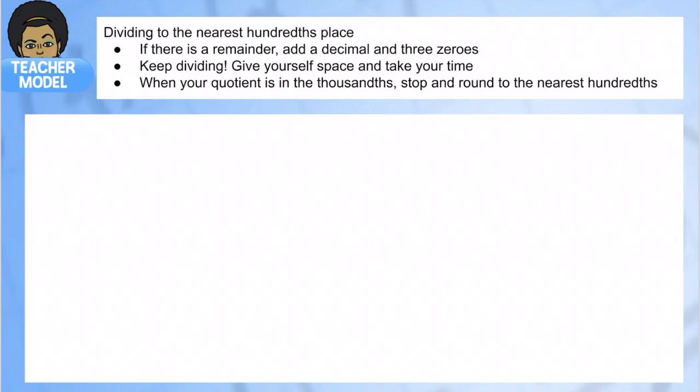After we divide to the thousandths and we have three numbers all the way to the thousandths in our quotient, you're going to see how we round to the nearest hundredths using a little rhyme. So I'm going to use this problem to just model it out.